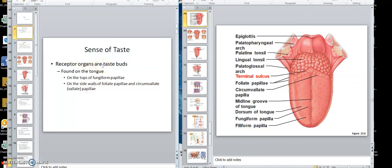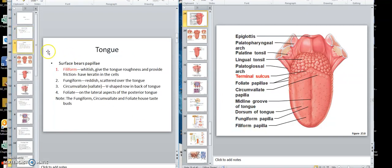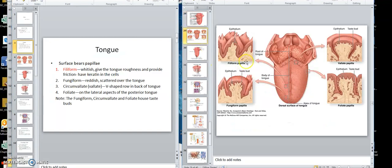Receptors are taste buds, found on the tongue, but also inside the cheek, too. The surface bears papillae, filliform, and this is what we saw before, right here. Now, this one did not have taste buds right there. We already talked about that.